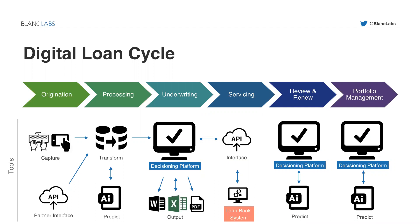Switching to the digital loan cycle, the steps are not different — we still see the same six steps. But now everything is around the decisioning platform and the lending platform. The data capture within the digital cycle is fully digitized. We can even use APIs to connect to other partners and interface with them to capture and do the origination part. Processing is also part of the digital aspect through transformation of data from origination to underwriting. On the underwriting side, we see the decisioning platform as a centralized data repository and risk rating and reporting mechanism, which still interacts with tools like Word, Excel, and PDF — but always interfacing with that centralized decisioning platform.